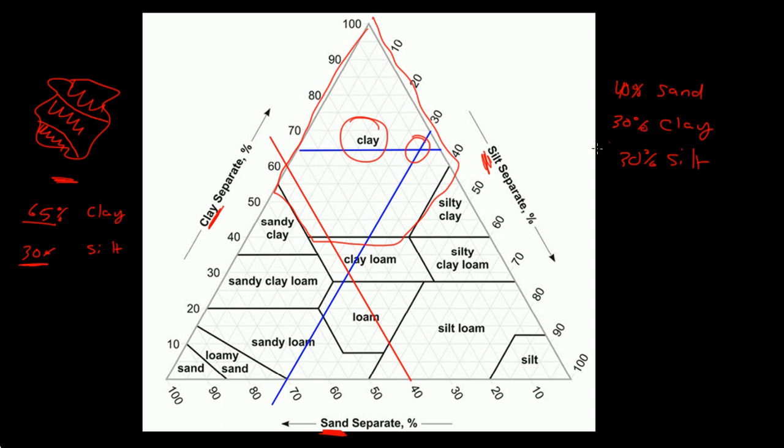Then you have 30% clay, which is right about here. And then you have 30% silt, which is this blue line again. Notice that these three lines intersect right here. So this soil is a clay loam.